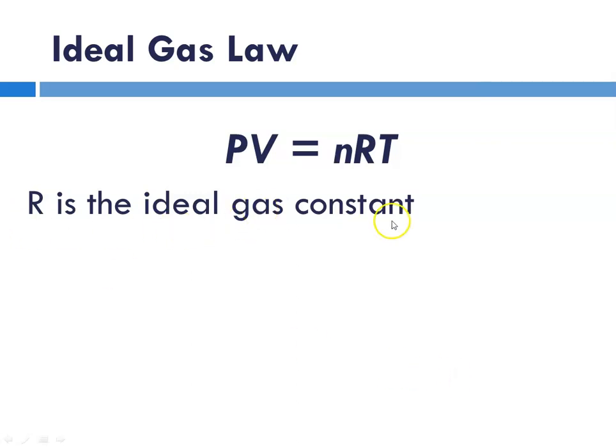R is this ideal gas constant, and depending on what numbers that you plug in for P, V, and T, you can get the ideal gas constant with different units. For instance, if you were to plug in the pressure is 101.325 kilopascals, a volume of 22.4 liters, 1 mole for n, and T standard temperature which would be 273, you would get 8.31 liter kilopascals per mole Kelvin.